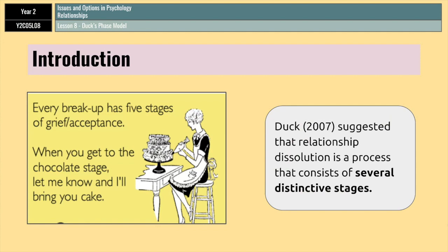Just as a little bit of an introduction, many people view relationship breakdown as a one-off event that just happens when a person or a partner decides to leave a relationship. However, Stephen Duck, a social psychologist, suggests that relationship breakup is a process that consists of several distinctive stages that people pass through before the relationship is actually well and truly over. And it is these stages that make up Duck's Phase Model. We're now going to go through those stages and have a look at what each of them entails.